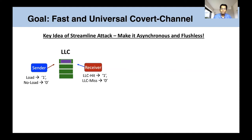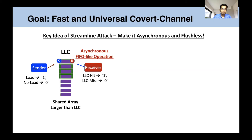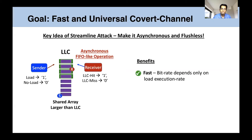The key idea of Streamline is to make the protocol asynchronous. Rather than colluding over a single shared address, Streamline uses a sequence of shared addresses larger than the LLC for transmission. This allows an asynchronous FIFO-like operation where the sender can transmit on successive addresses while the receiver keeps following behind it in a streamlined manner. Because the sender or the receiver does not have to wait for each other, this protocol is extremely fast and the bit rate is only dependent on the load execution rate.